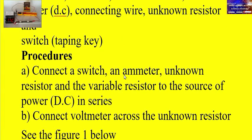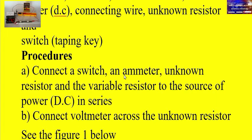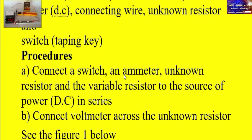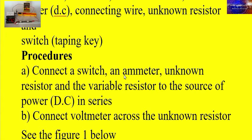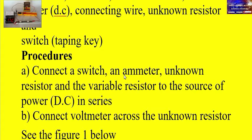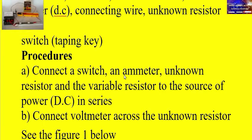Procedure: First, connect the switch, ammeter, unknown resistor, and variable resistor to the source of power (DC) in series. The source of power can be a cell or battery — a battery is composed of two cells, so you can use one cell or two cells. After connecting the series circuit, connect the voltmeter across the unknown resistor, meaning the voltmeter is in parallel with the unknown resistor.